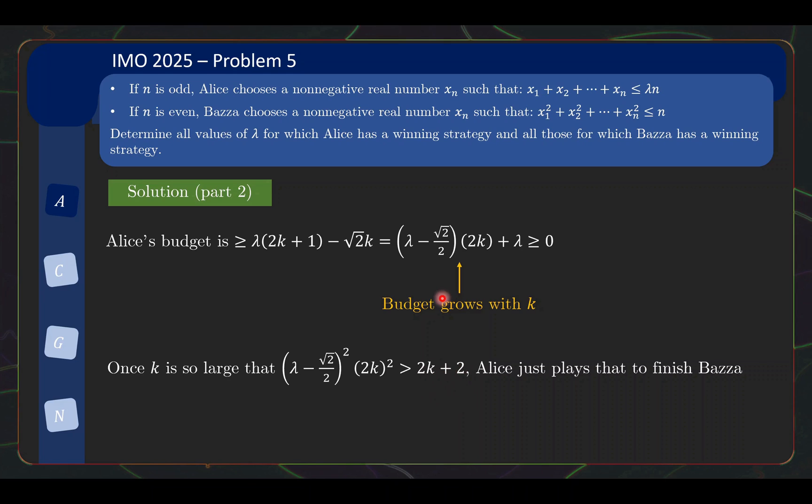So once the budget grows so big that this term over here, which is here, and taking the square of that is bigger than 2k plus 2, then Alice can just play this expression over here to finish Bazaar because this thing squared is going to be thrown to Bazaar next and it's bigger than 2k plus 2 then, gg to Bazaar. And indeed this k will eventually happen because the quadratic will grow faster than linear. Okay, so a very interesting strategy. Alice just controls, waits for the perfect time to finish off Bazaar.